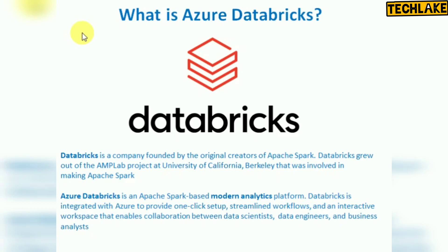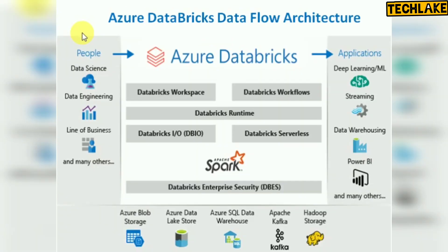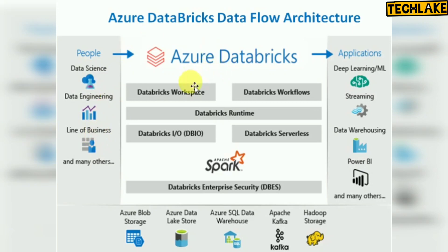Let's start with the architecture — the complete data flow architecture: what sources we're going to use, where data will be stored, and what are the features and components. The people who use this include the data science team, data engineering team, line of business, and data analysts.